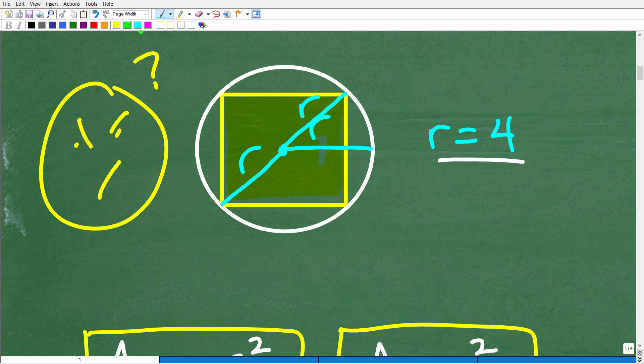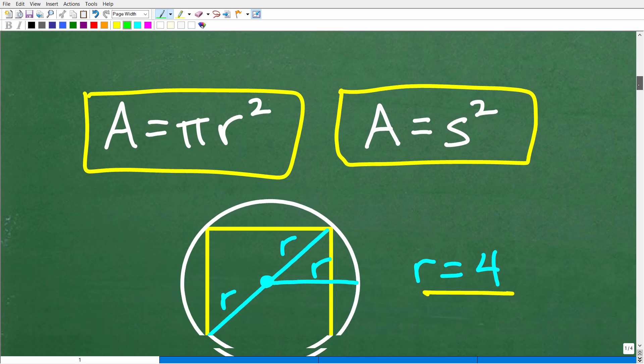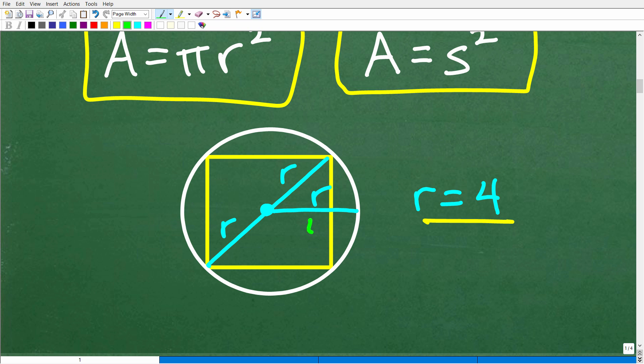So this changes everything because here now, this entire length is actually the diagonal of the square. This is really kind of the secret of doing this problem. So if this is 4, well, then this is 4 right here, and so is this. This is 4. So the entire distance of the diagonal is 8, 4 plus 4, right? So now we can kind of look at our problem in this way.